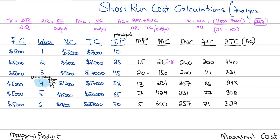We have calculated average variable cost by dividing variable cost by total output — for example, 6,000 divided by 25, or 9,000 divided by 45. Average fixed cost is calculated by taking the fixed cost of $5,000 and dividing by the output: 5,000 divided by 25, 5,000 divided by 45, and so on. Average total cost can be calculated either by dividing total cost by output, or by adding average variable cost and average fixed cost.